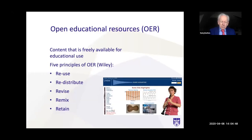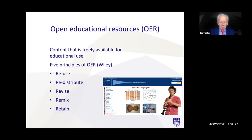Let's talk a little bit about open educational resources. This is content that is freely available for educational use. There are five principles of open educational resources from David Wiley, covered in the book: reuse — you're free to use the material without having to get permission; redistribution — you can share it with others or give it to your students; revise — you can adapt or change it; remix; and retain — you can keep it as long as you want, with no license that expires.